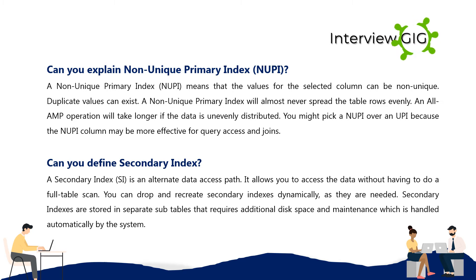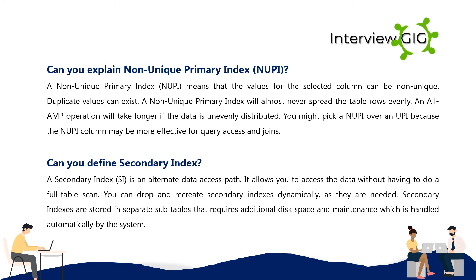Can you define Secondary Index? A Secondary Index (SI) is an alternate data access path. It allows you to access the data without having to do a full table scan. You can drop and recreate secondary indexes dynamically as they are needed. Secondary indexes are stored in separate sub-tables that require additional disk space and maintenance, which is handled automatically by the system.